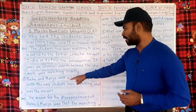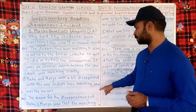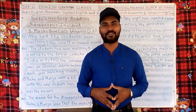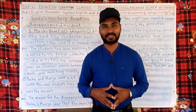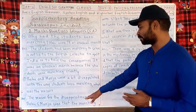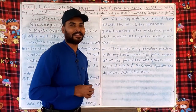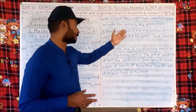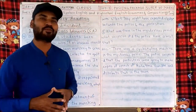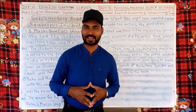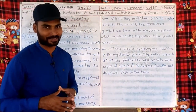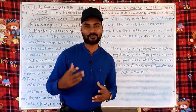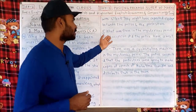Fifth question: Why were Babu and Manju a bit disappointed with the way students had been marching? The reason for their disappointment was that the march was silent. They might have expected clashes between the police and the protesters — some kind of struggle, fight, or violence. The silent nature of the protest was the reason for their disappointment.